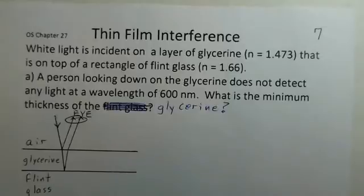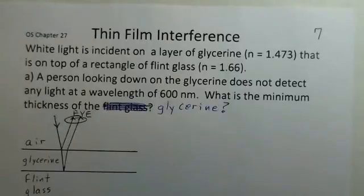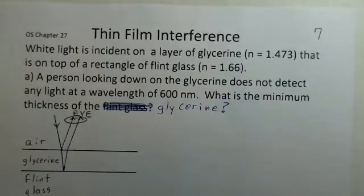Professor Clemis here as we consider topics in Section 7 of Chapter 27 of OpenStax College Physics: thin film interference — constructive and destructive interference caused by light reflecting from the top and bottom of a thin film.